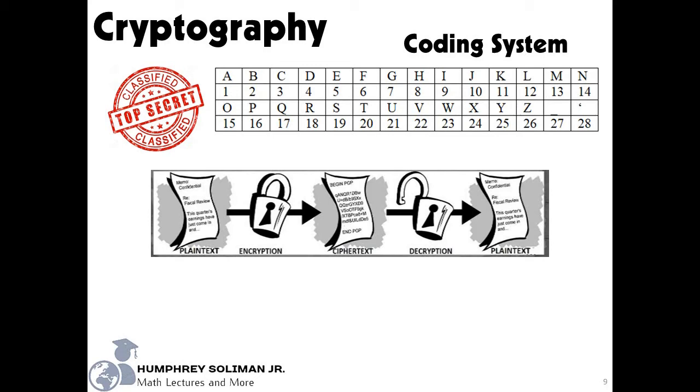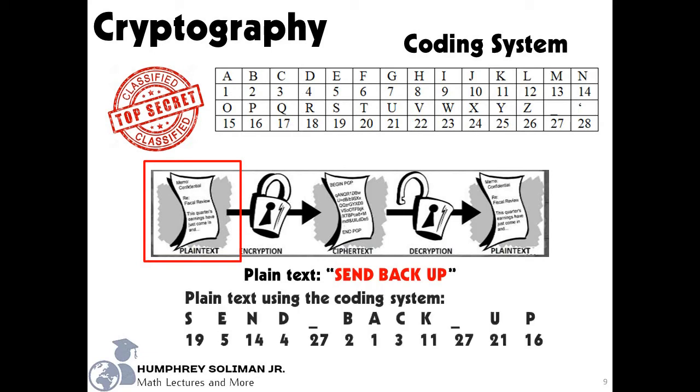So for example, our message in plain text is send backup. For our encryption process, we will match each character with numbers from our coding system, which will look like this. S is 19, E is 5, N is 14, and so on.